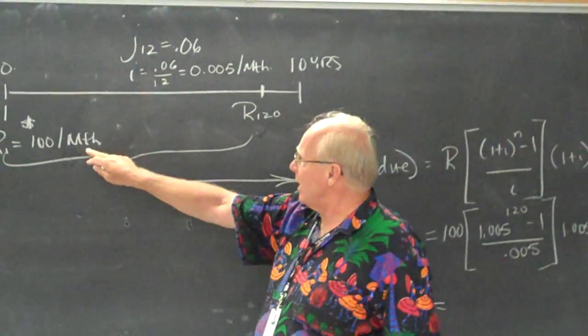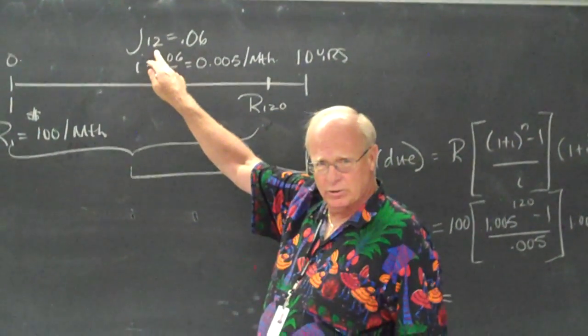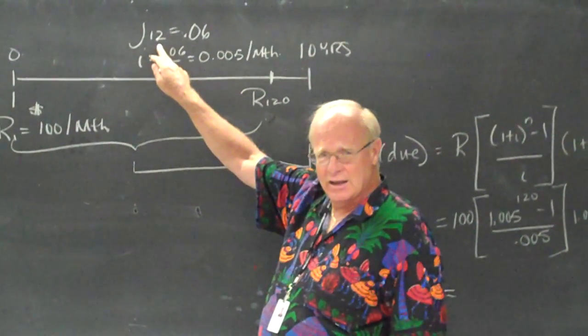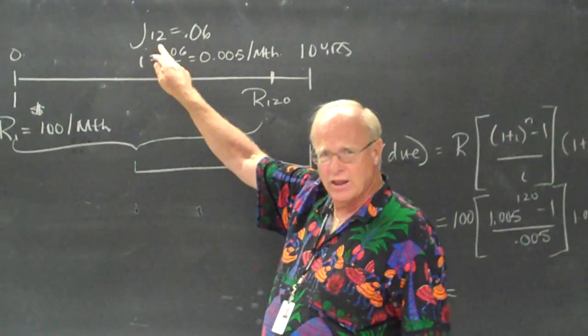The number of payments per year is 12 because it's monthly. And the number of compoundings per year, it assumes is the simple case, which in this case is correct, is also 12. So all that's ready to go.